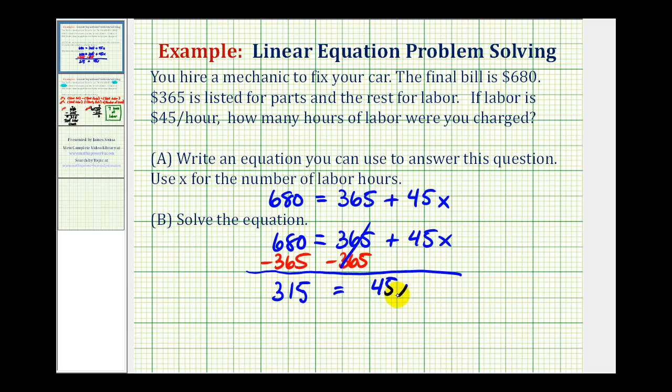And then to solve for x, we divide both sides by forty-five, which again we already did on the previous slide. So we know this quotient here is equal to seven. Again, giving us the same answer, we were charged seven hours of labor.